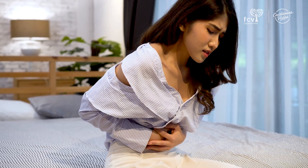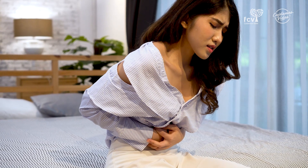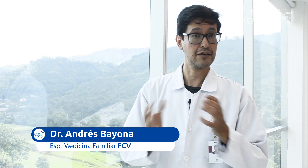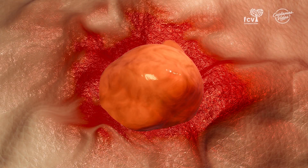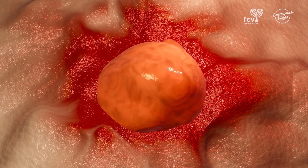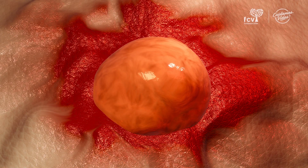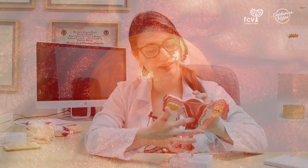Estos fragmentos de endometrio empiezan a producir dolor; entonces el síntoma principal es el dolor. Es un dolor cíclico: cuando se acerca la menstruación duele más, porque estos tejidos de endometrio crecen de acuerdo a la producción de hormonas de las mujeres. El dolor es la causa más frecuente por la cual las personas consultan.